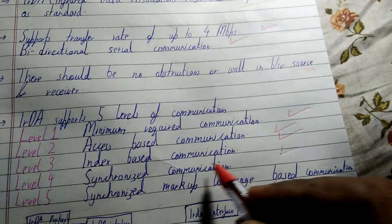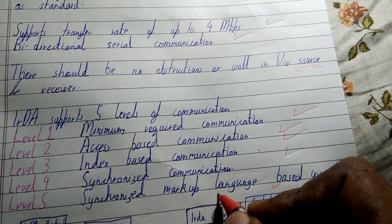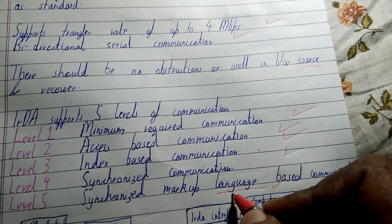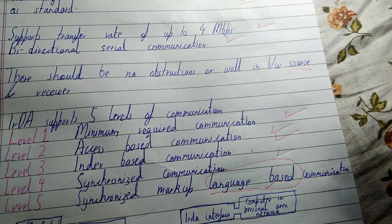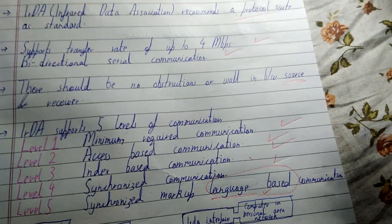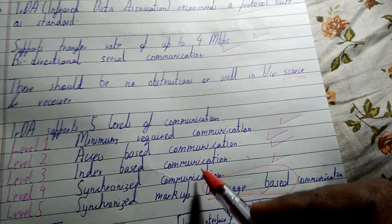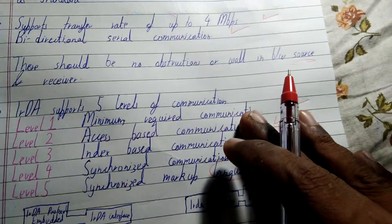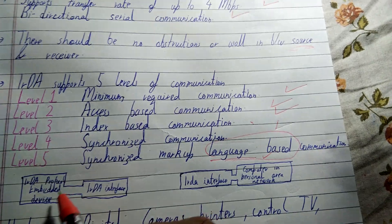The difference between level four and level five is that in level five a proper language based on synchronized communication is used, whereas in level four only synchronized communication is done without that markup language.